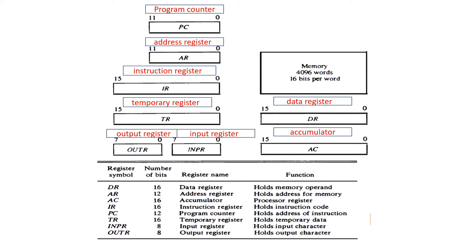First, we will start with DR register. DR register is nothing but data register and it's going to have 16 bits. It starts from 0 and ends at 15 — it's a 16-bit register. The main purpose of using data register is to store the data or memory.